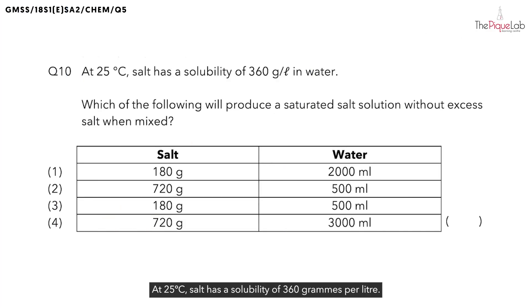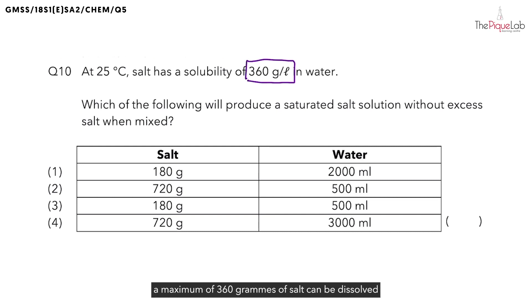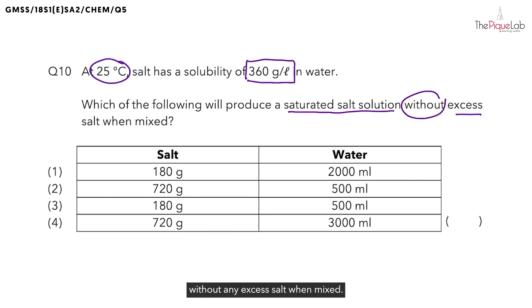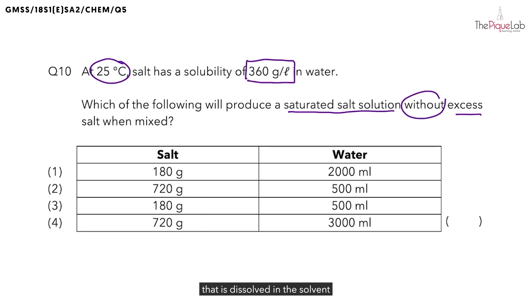Question 10. At 25 degrees, salt has a solubility of 360 grams per litre. That means if you have one litre of water, a maximum of 360 grams of salt can be dissolved into that one litre of water at 25 degrees Celsius. So we are looking at which of the following options will produce a saturated salt solution without any excess salt when mixed. In this case, you have the maximum amount of salt dissolved in the solvent and you do not want any extra salt to be left behind undissolved.